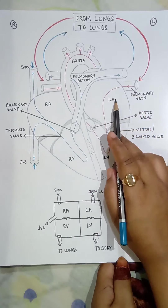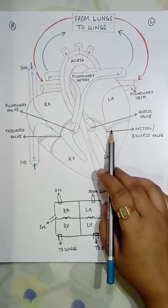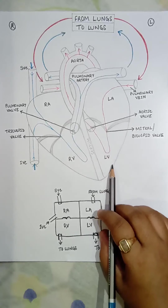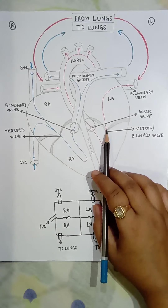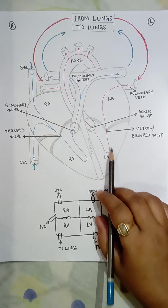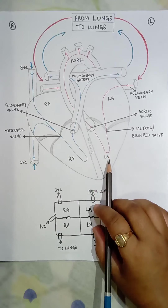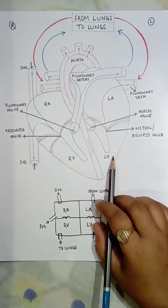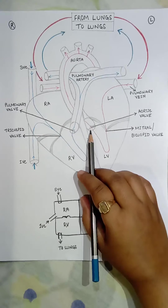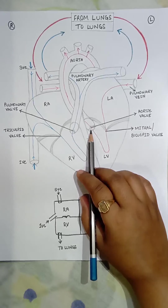The left atrium contracts, the bicuspid valve opens, and blood flows into the left ventricle. Immediately after, the bicuspid valve shuts to prevent backflow when the left ventricle contracts. The left ventricle then pushes blood through the aorta, the main artery that delivers oxygenated blood to the body.